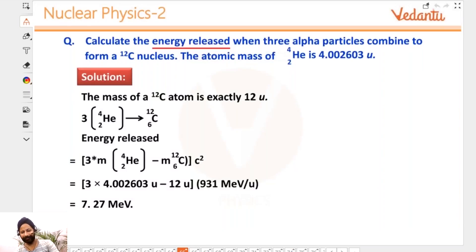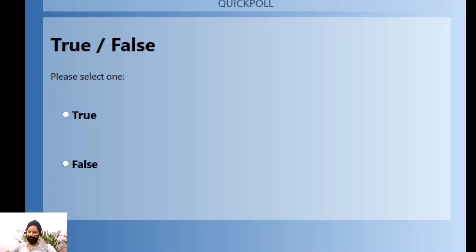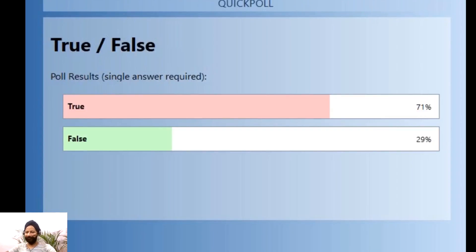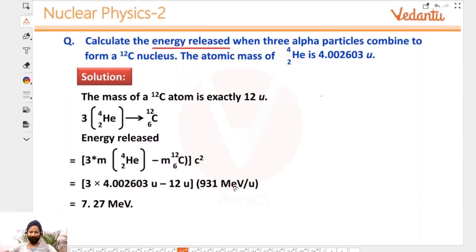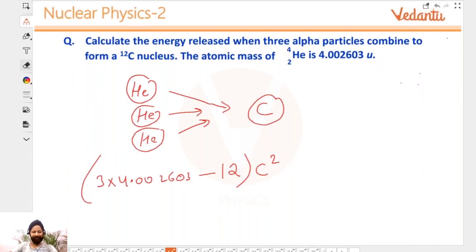You can convert to mega electron volts if you want by using 931 mega electron volts is one atomic mass unit. Now I'm going to post a poll saying is this clear or no. True means clear, false means not clear. There are still some students who didn't get it, but why are you not asking the doubt here? I will explain one more time.